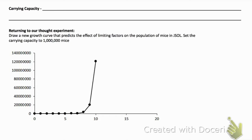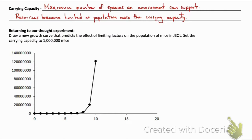Carrying capacity is the maximum number of species an environment can support. As resources are limited in a population, these will have an effect on the maximum number of organisms that can be present in an ecosystem.